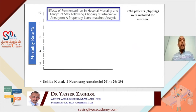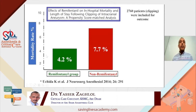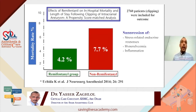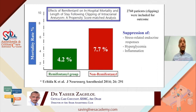Regarding why remifentanil should be used in patients with subarachnoid hemorrhage: in a study of more than 2,000 patients coming for aneurysm clipping, one group used remifentanil and one used fentanyl as intraoperative opioids. The mortality rate with fentanyl was 7.7% versus 4.2% with remifentanil. Like dexmedetomidine, remifentanil reduces stress and endocrine response, reduces hyperglycemia, and blunts inflammation. After this large study of 2,760 patients, remifentanil is recommended for patients coming for clipping of intracranial aneurysms.